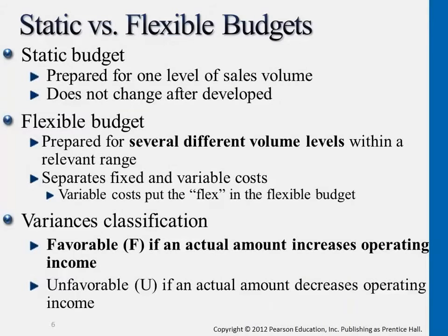To understand in more detail the different categories of differences: static budget is what we learned in the previous chapter — the master budget. It means we set a specific level of units we expect to sell for next season. We listed four months of expected units of sales, expected variable expenses, fixed expenses, and other budget areas like operating budgets and financial budgets. So in the master budget, we only set a certain level of sales for each month. That's why we call this the static budget.